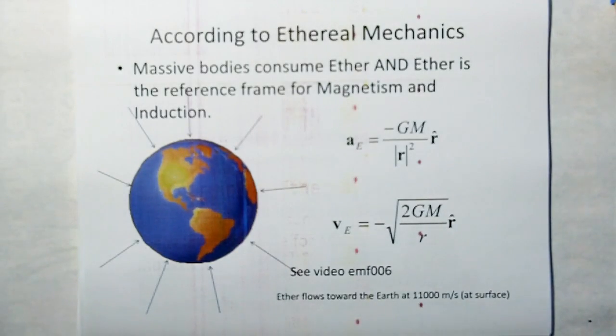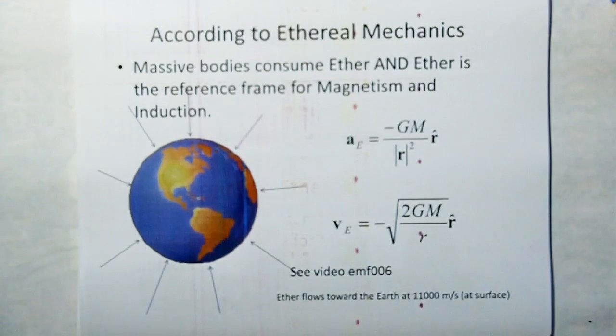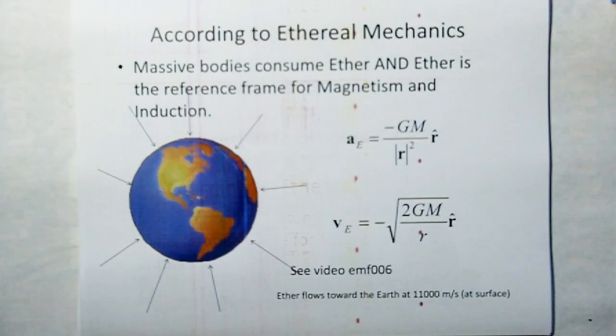According to ethereal mechanics, massive bodies consume ether. Ether is flowing constantly down in all directions on the earth. And ether is a reference frame for magnetism and induction.